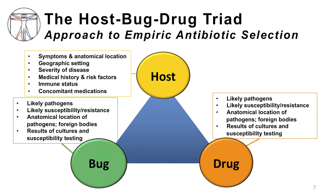As one example, likely pathogenic etiologies for certain infections differ depending on various host factors, seen here in the yellow box, such as geographic setting including country, hospital, inpatient versus outpatient setting, and other similar characteristics, anatomic location, and host immune status. Similarly, drug characteristics, seen here in the orange box, must be kept in mind, including spectrum of pathogen coverage, penetration or drug concentration at the anatomical site of infection, and possible detrimental drug-drug interactions.